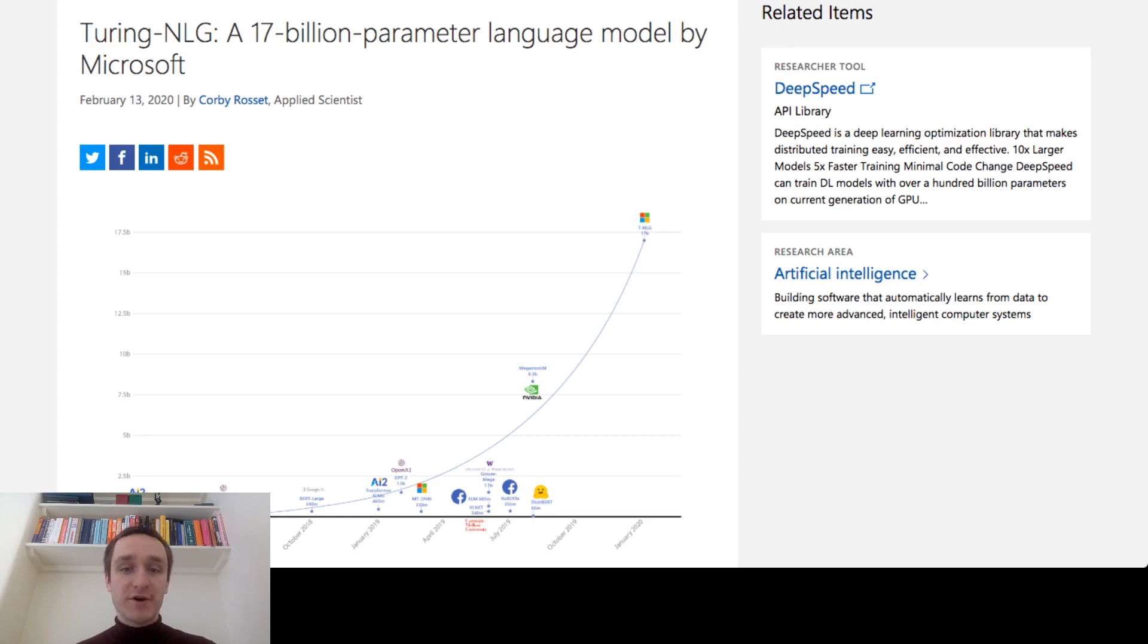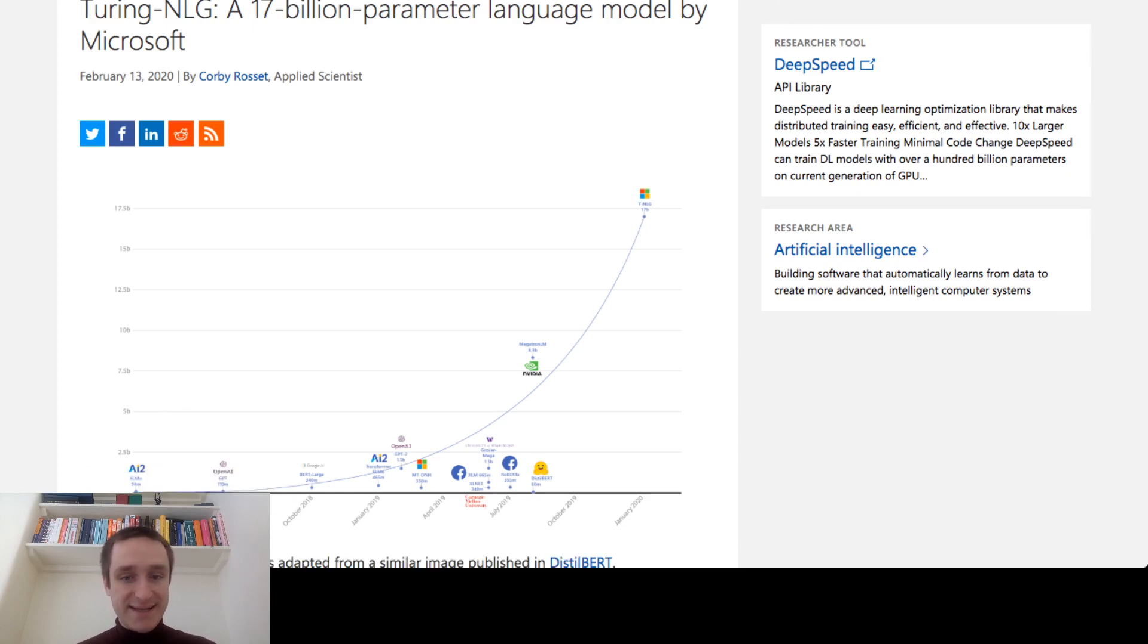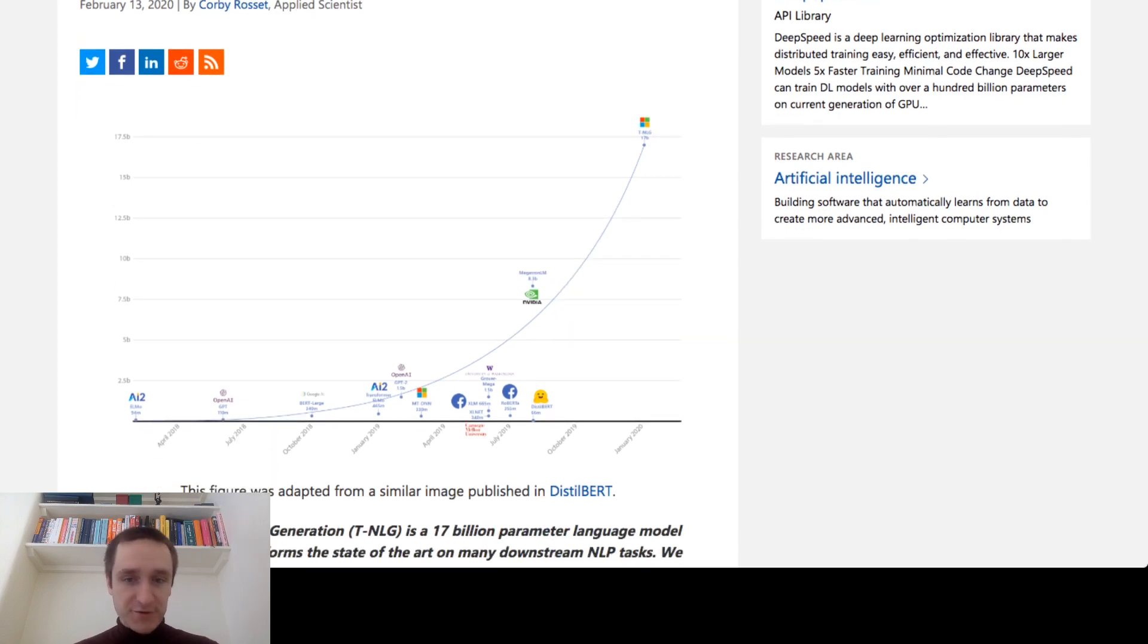You can see the comparison of the models that they did, with OpenAI being here and Turing being at the very far end, along with Hugging Face and NVIDIA Megatron.